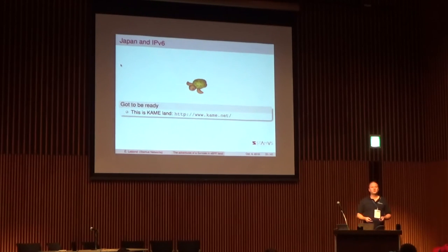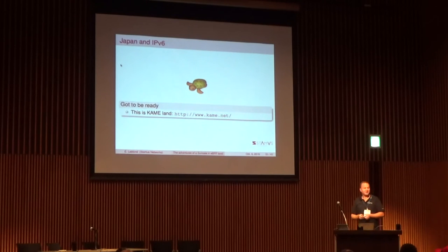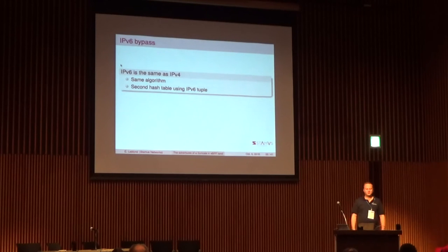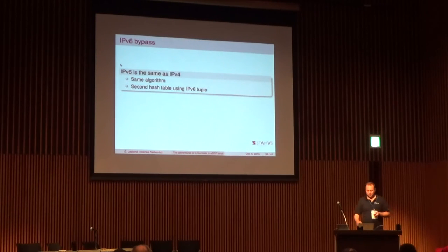Japan was the host of the KAME initiative that brought IPv6 to a lot of BSDs, so it was impossible not to have IPv6 support when coming here to speak. IPv6 is the same as IPv4 — it's easy. So let's do exactly the same: just add a second hash table to contain the IPv6 5-tuple and we're good.